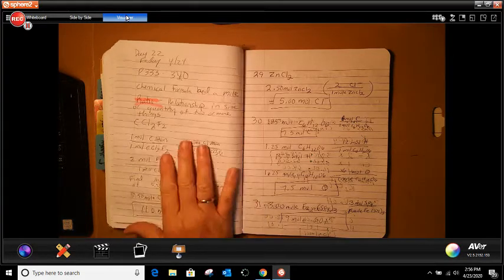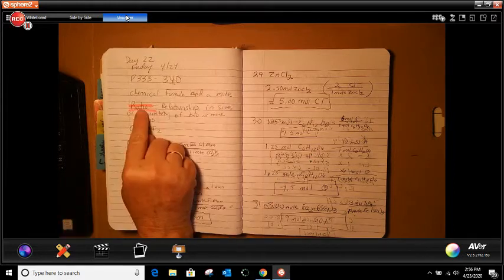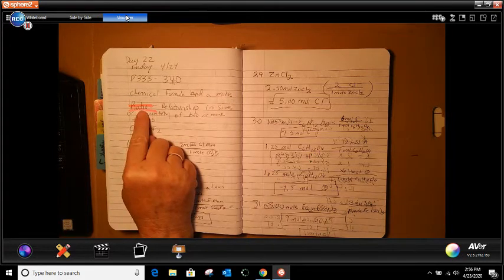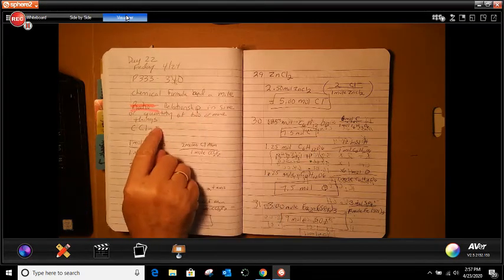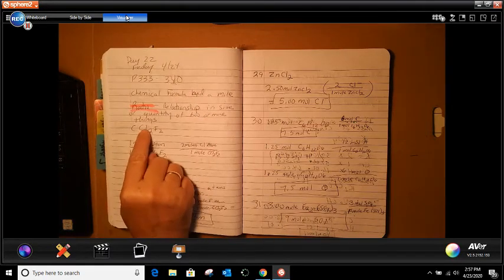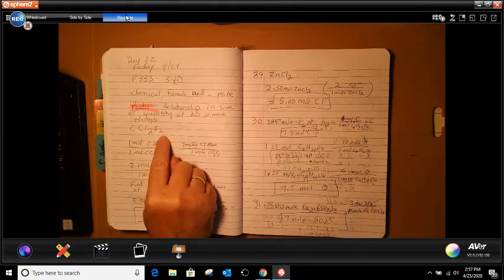First thing that it talks about is what a ratio is. So when we're talking about a ratio, we're talking about a relationship of the size and quantity of two or more things. Like this is carbon. Chlorine has two. Fluorine has two.